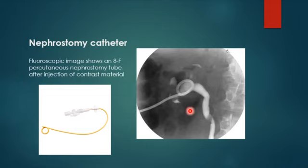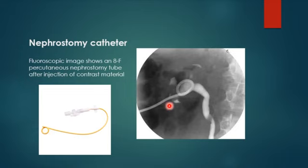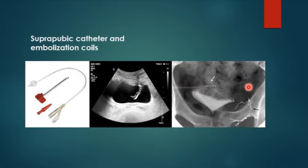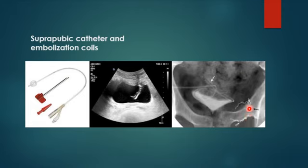A nephrostomy catheter is placed through the skin — used when a double-J stent cannot be inserted or when obstruction is present. It has a pigtail or coiled end to fix it inside the kidney, visible on X-ray. A suprapubic catheter is inserted just below the umbilicus into the bladder with a balloon to keep it in place, visible on ultrasound as two echogenic lines. Some patients also have pelvic embolization coils visible near the bladder.